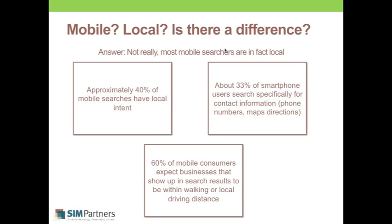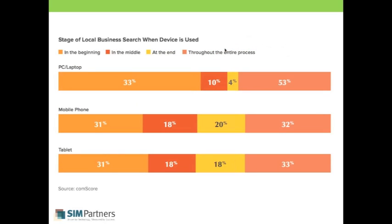This compelling graphic from a recent research study shows that mobile searchers are further down the funnel than PC users. 38 percent of mobile users and 36 percent of tablet searchers report being either in the middle or at the end of the purchase funnel, versus just 14 percent for PC and laptop users. This is why local search marketers find so much appeal in mobile marketing. Mobile users tend to have smaller screens, tiny keyboards, and slower page loads — they're not typically window shopping.